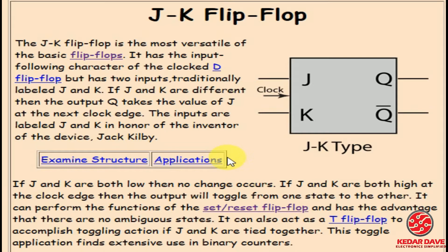The JK flip-flop can perform the functions of the SR flip-flop and has the advantage that there are no ambiguous or invalid states. It can also act as a T flip-flop to accomplish toggling action — when input is one, the output gives zero, and when input is zero, the output gives one. That is the basic concept of toggling and the basic idea of the JK flip-flop.